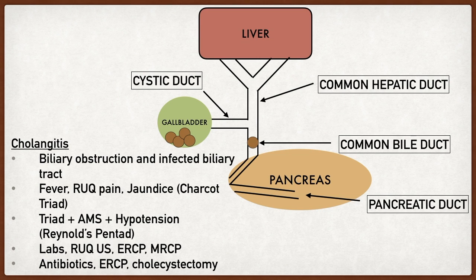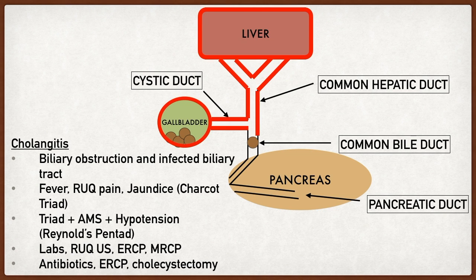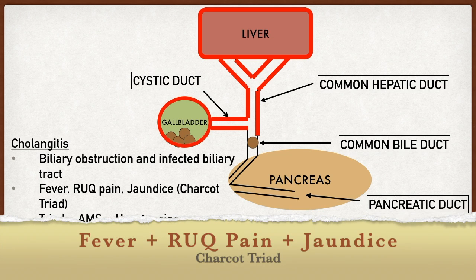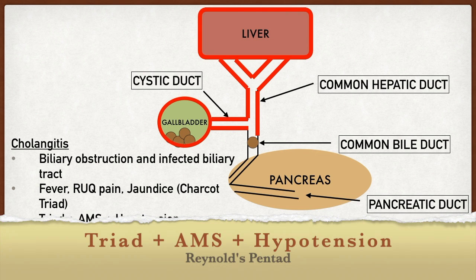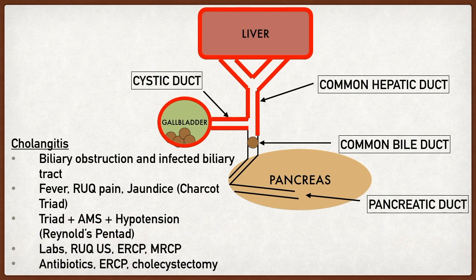Problems arise if the stone continues to obstruct the outflow tract. In cholecystitis, a stone obstructing the cystic duct led to inflammation of the gallbladder. In cholangitis, a stone in the common bile duct leads to inflammation of all structures proximal to it — not only the gallbladder, but also the liver and biliary tree. Similar to choledocholithiasis, the patient may have right upper quadrant pain and jaundice from blocked hepatic outflow increasing bilirubin. In cholangitis, the patient may also have fever. This triad of fever, right upper quadrant abdominal pain, and jaundice is known as Charcot's triad. Reynolds pentad adds altered mental status and hypotension to the triad.